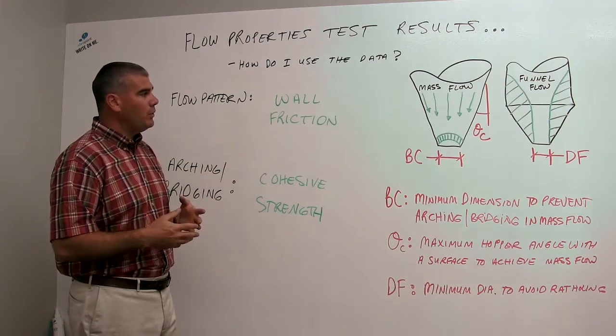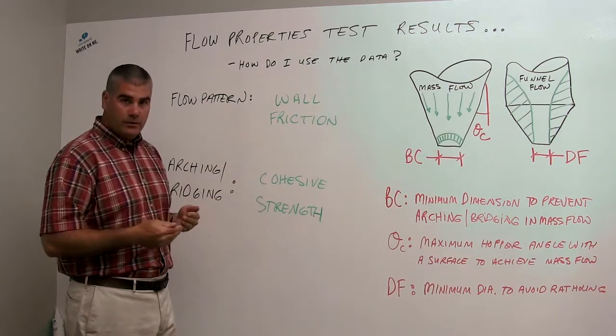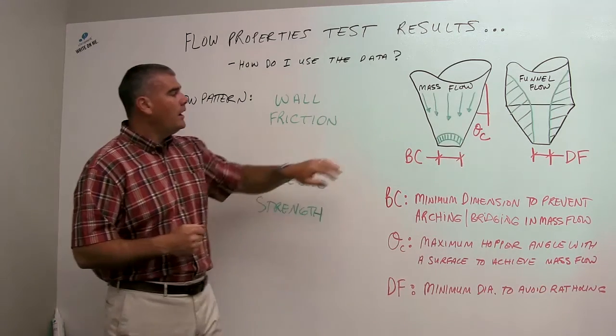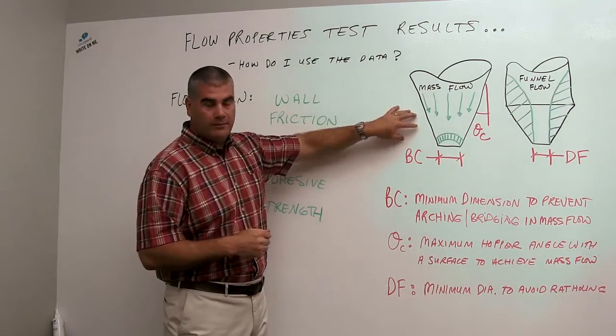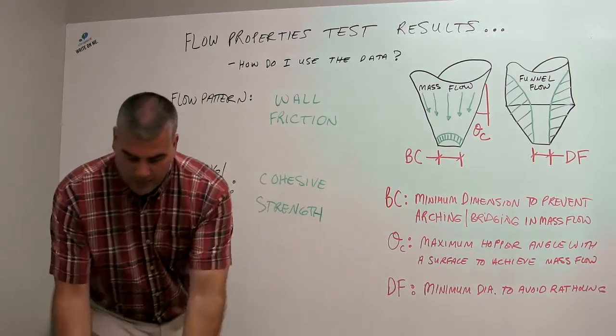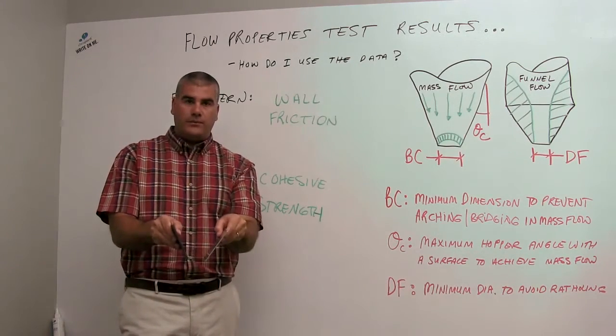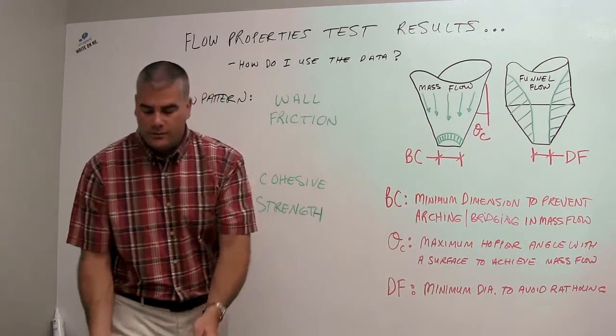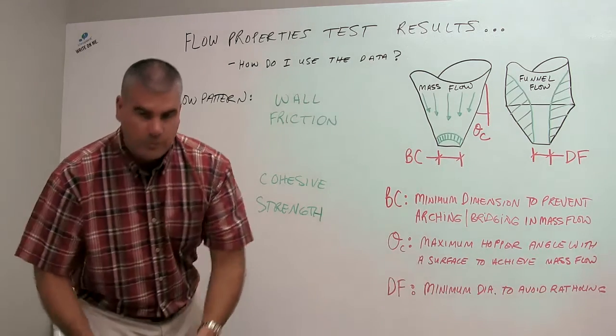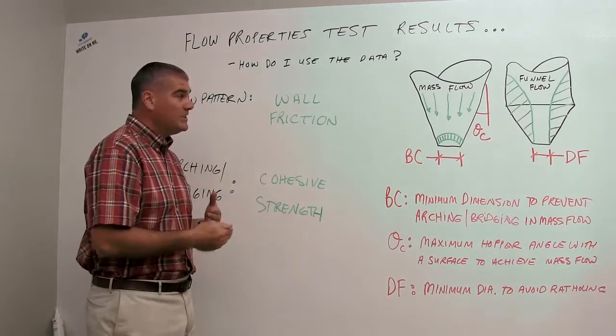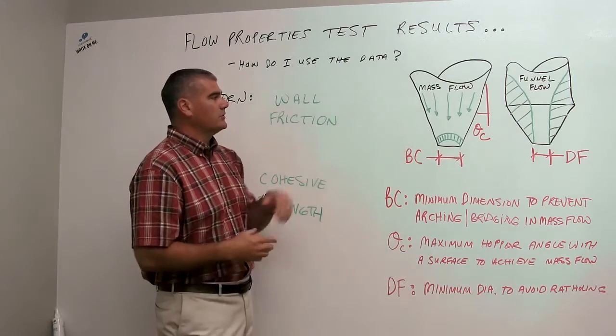In the test report, we also have angle solutions for hoppers that are not cones. We have them for wedge-shaped hoppers, where the hopper is essentially formed by two flat walls. And in those angle solutions, we find that we can achieve mass flow that much easier than doing it in a conical shaped geometry.